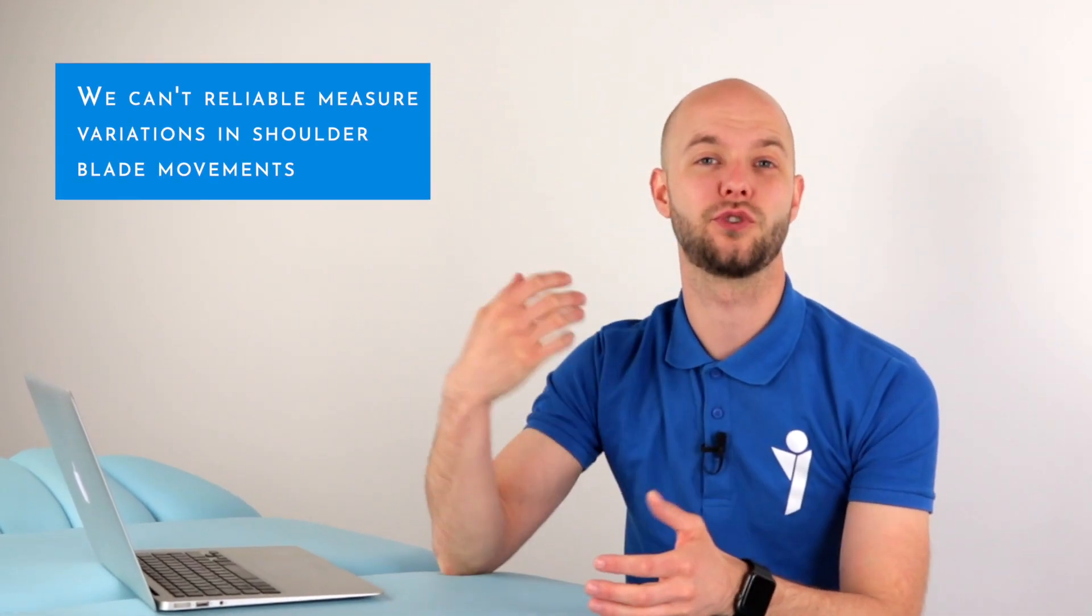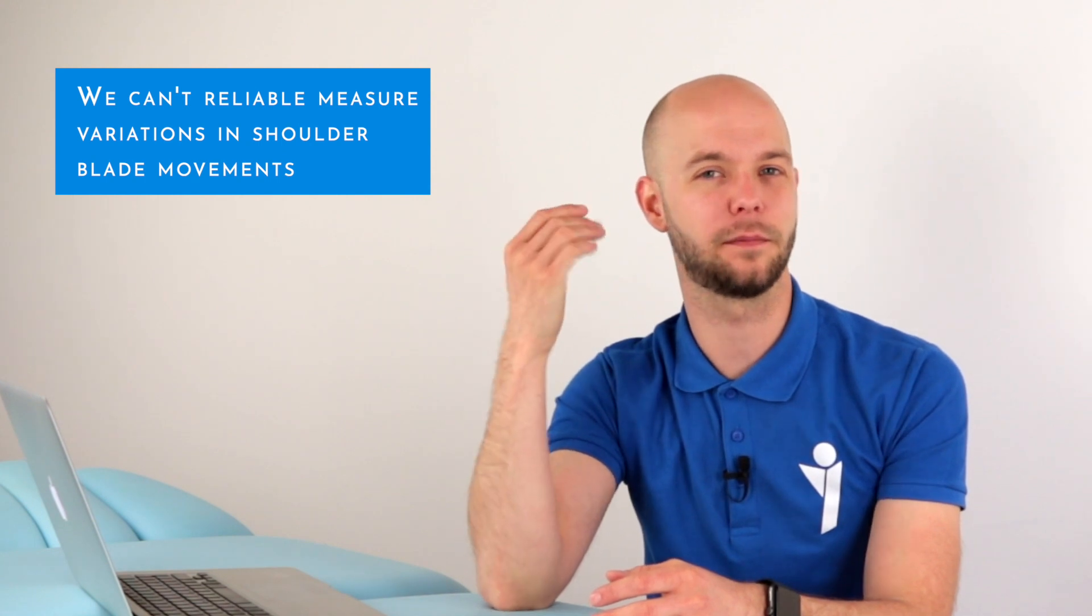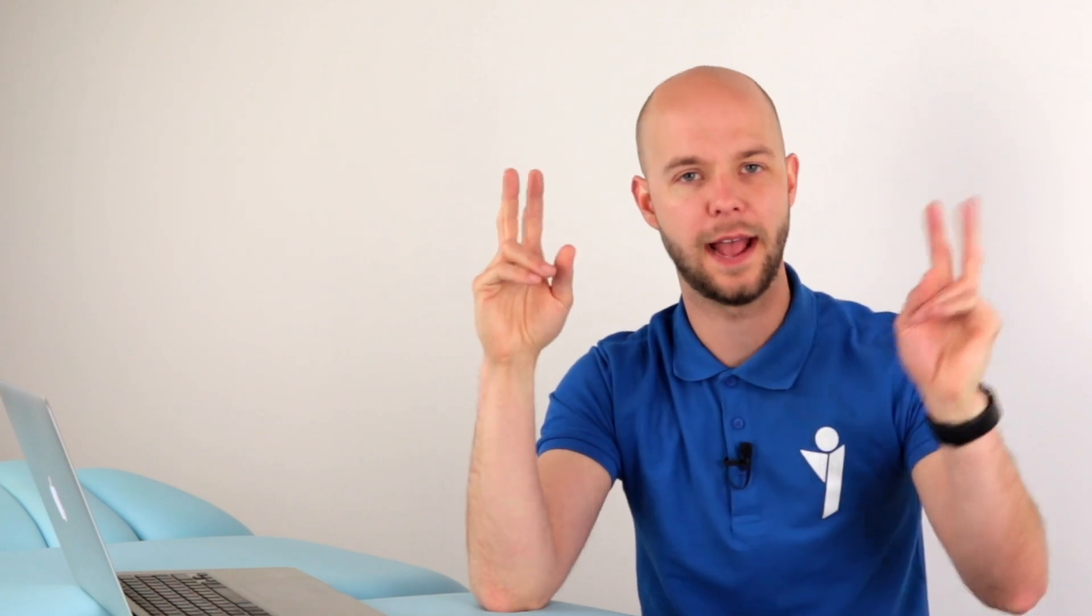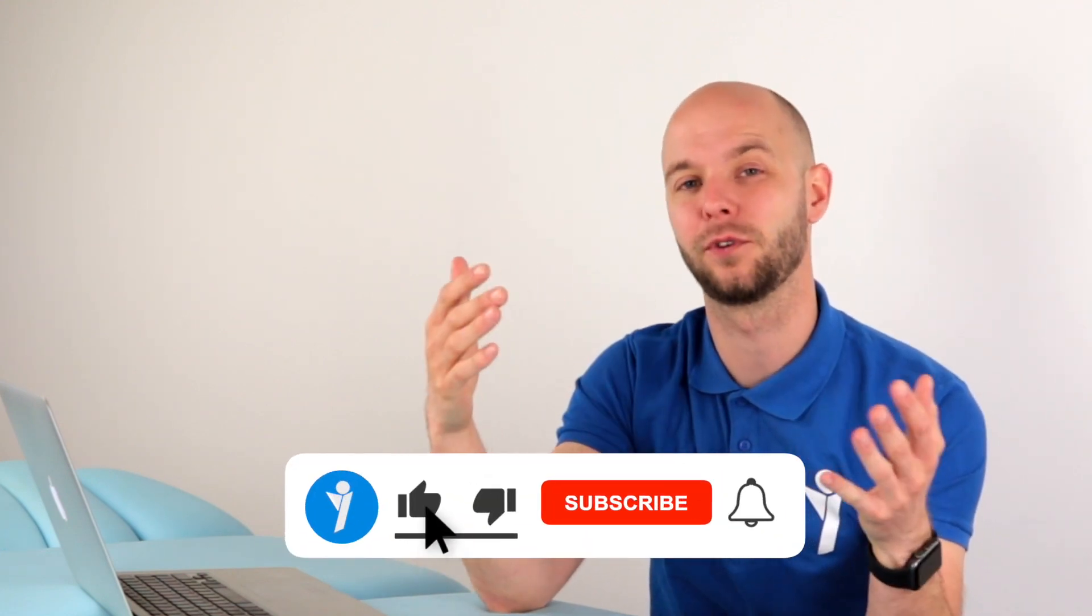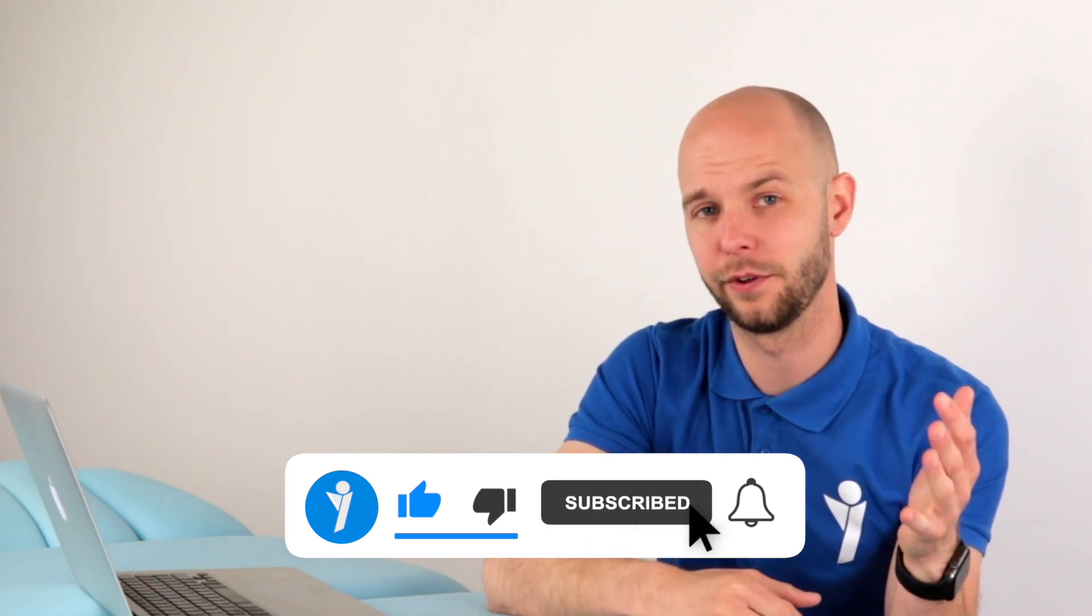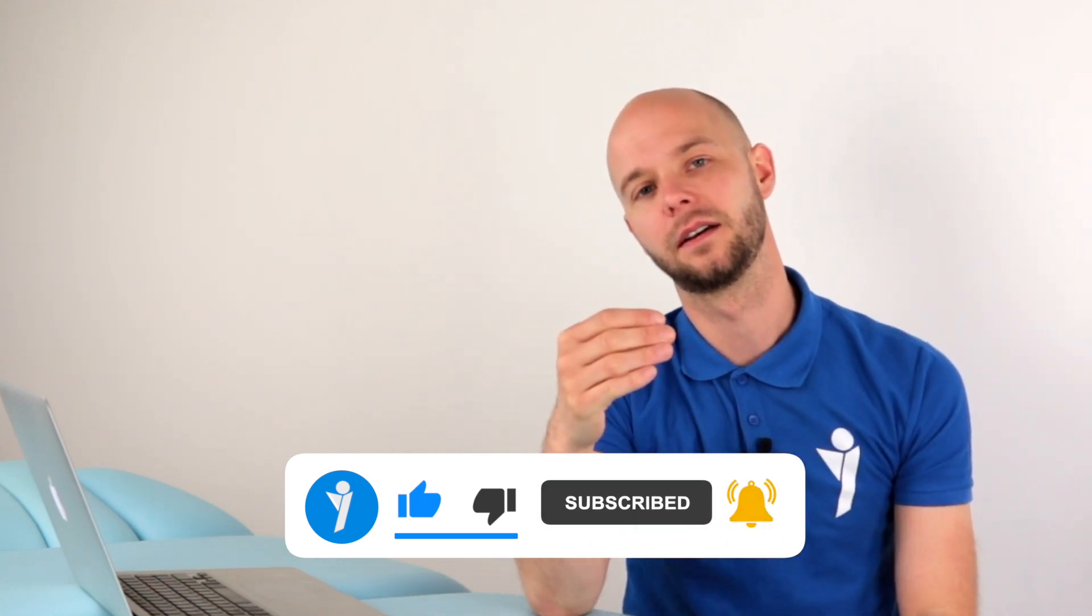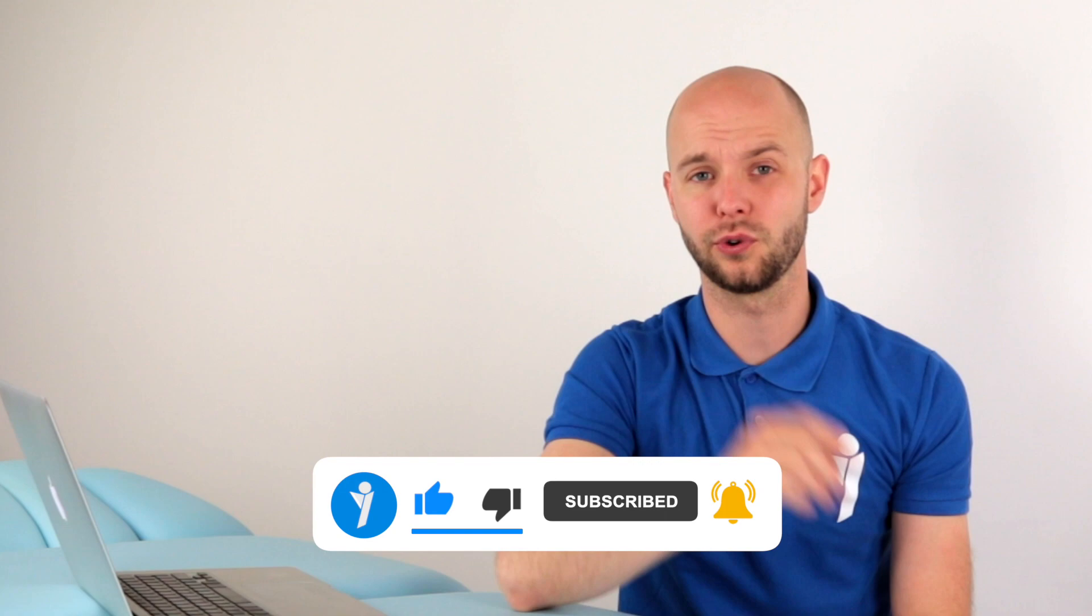Because if we are really honest, we can't even reliably measure changes of shoulder blade movements. And that's already fact number five. So if we can't measure changes of movement or abnormal movements, how can we even say that they are abnormal? Or to take it even further, how can we say that they are a part of your shoulder pain?